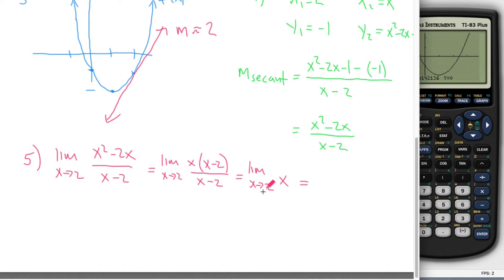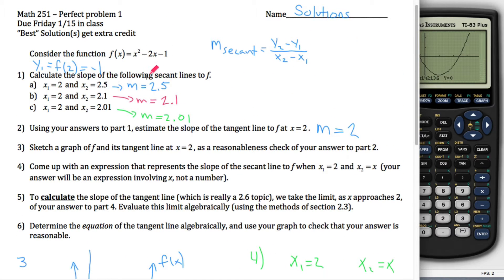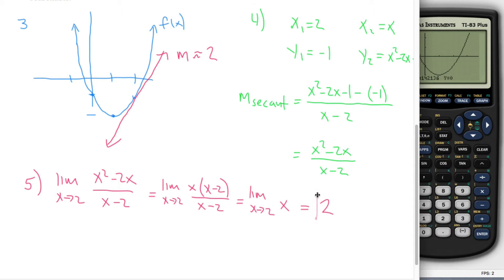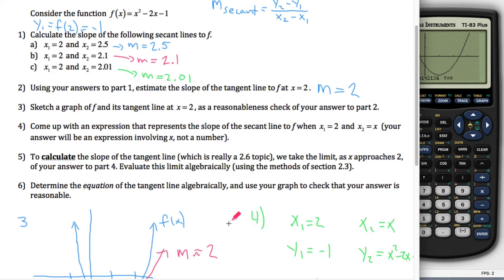The limit as x approaches 2 of x, well, that's easy enough. When x gets close to 2, what does x get close to? Well, 2. That's what this limit is, 2. That's the answer. Note that this simplifying down to just the limit as x approaches 2 of x, that's why these slopes were the same as these x2's. That won't always happen. That was just because of the function that we chose. But at any rate, for part 5, what you're supposed to do is calculate the slope of the tangent line. We just did that here, that's 2. I think that's everything for 5.